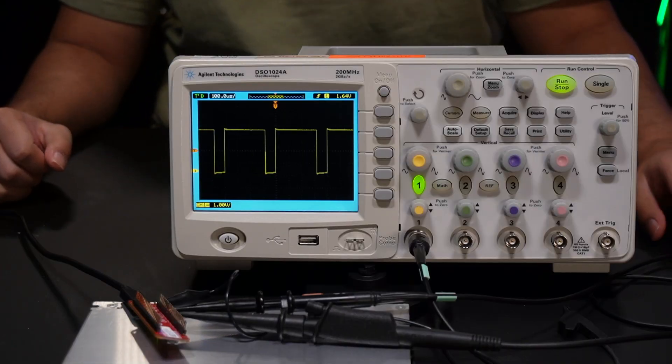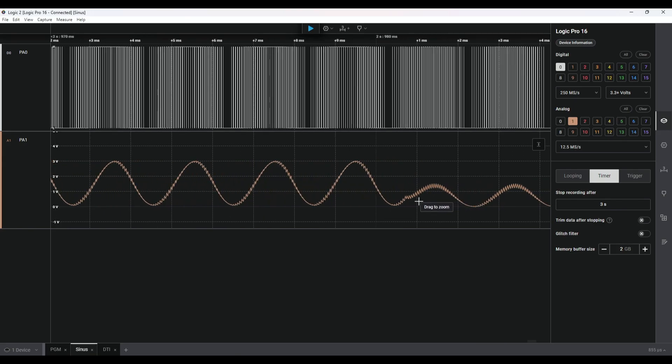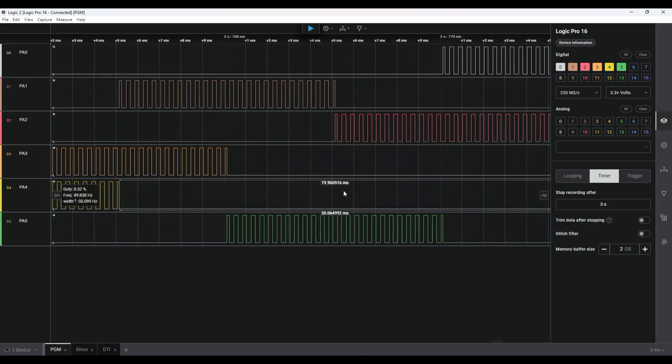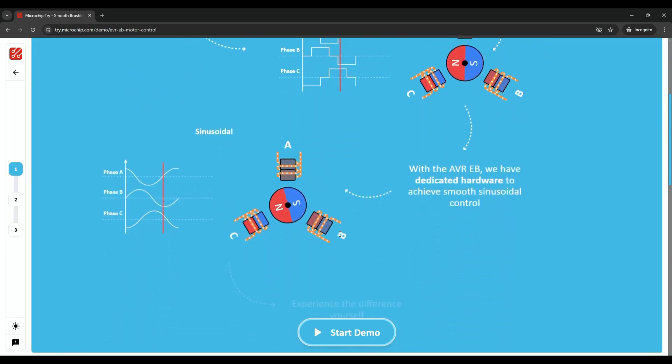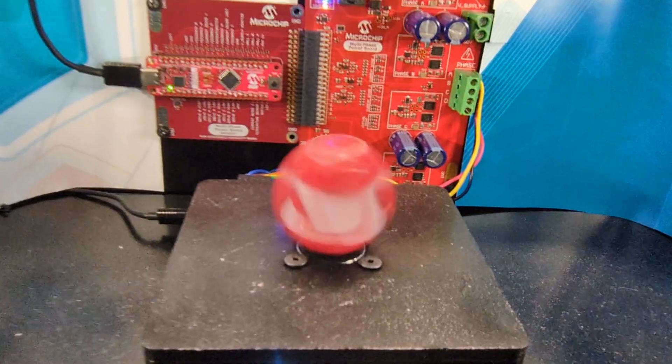The timer counter type E is an accurate, precise 16-bit timer, and together with the waveform extension, the peripheral could be used for event counting, signal generation, and even motor control.